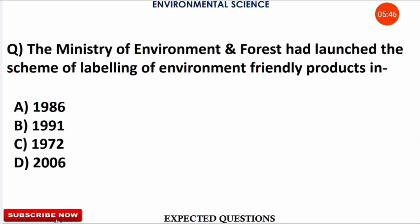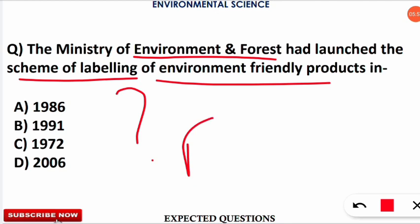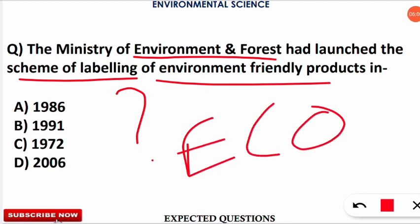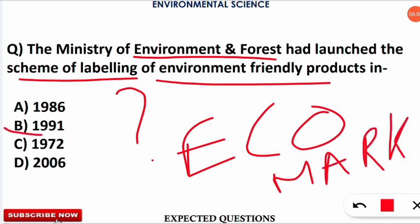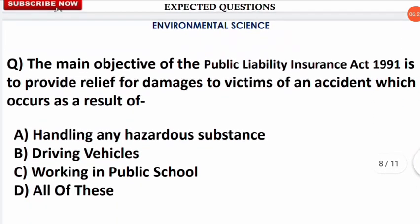The next question asks in which year the Ministry of Environment and Forest launched the scheme for labeling environment friendly products, i.e., the Eco Mark. The correct answer is option B — it was launched in 1991. Always relate this to the Public Liability Insurance Act, which was also enacted in 1991, so you can revise multiple concepts from one question.